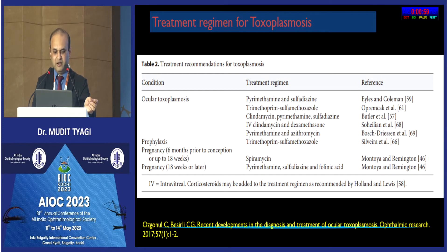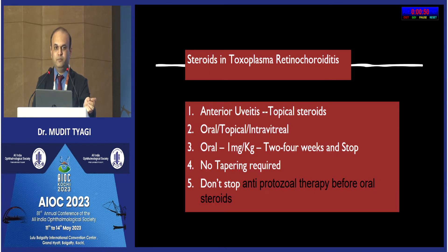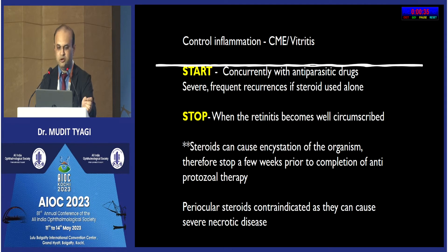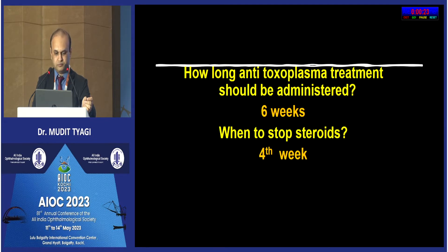For treatment, commonly used agents include pyrimethamine with sulfadiazine, or a trimethoprim-sulfamethoxazole combination, along with clindamycin. Steroids also have an important role — topical steroids for anterior manifestations, and oral steroids systemically. The critical point: do not stop antiprotozoal therapy before oral steroids. Start steroids concurrently with antiparasitic drugs and stop them once the retinitis lesion becomes well-circumscribed. Periocular steroids are generally contraindicated as they can lead to severe necrotizing disease.